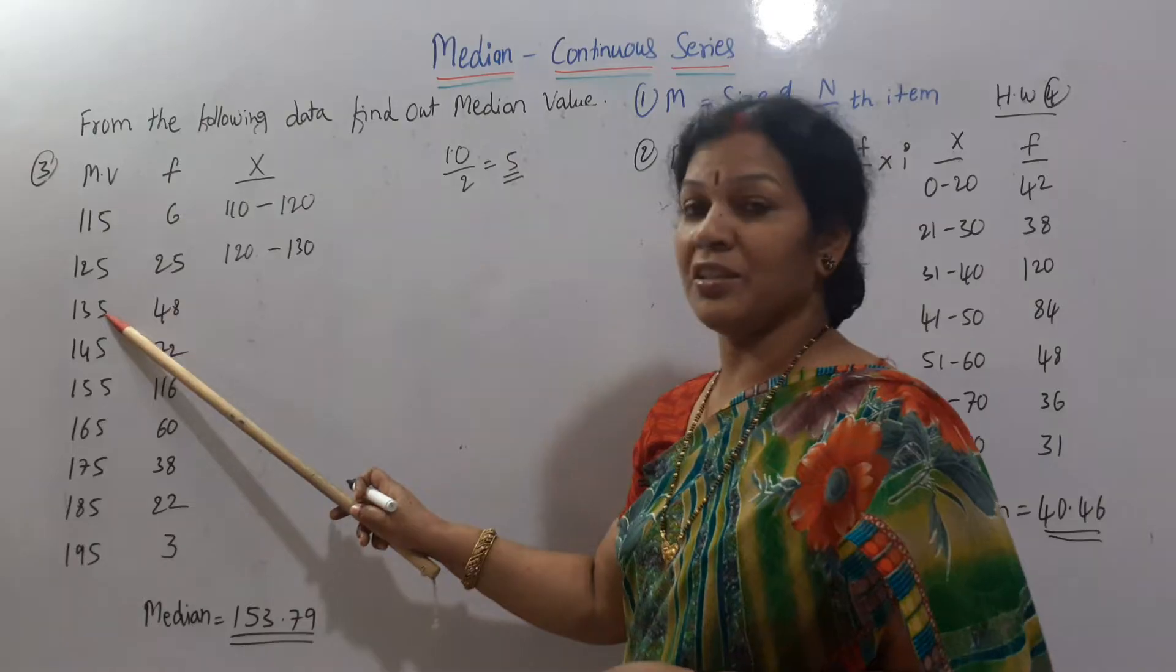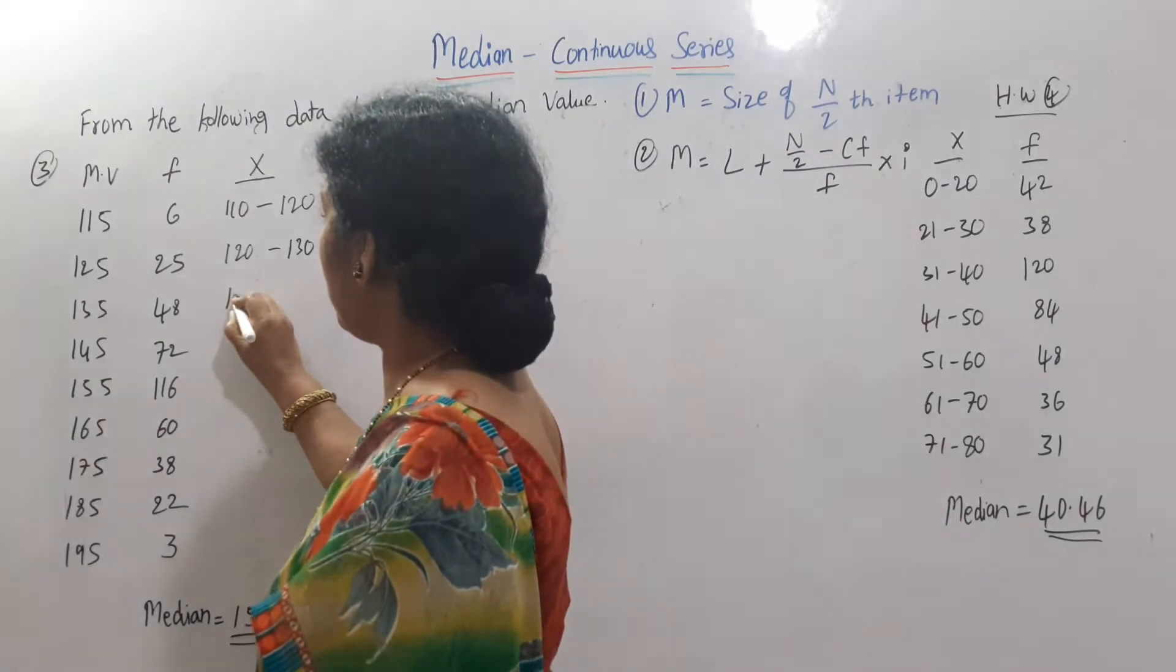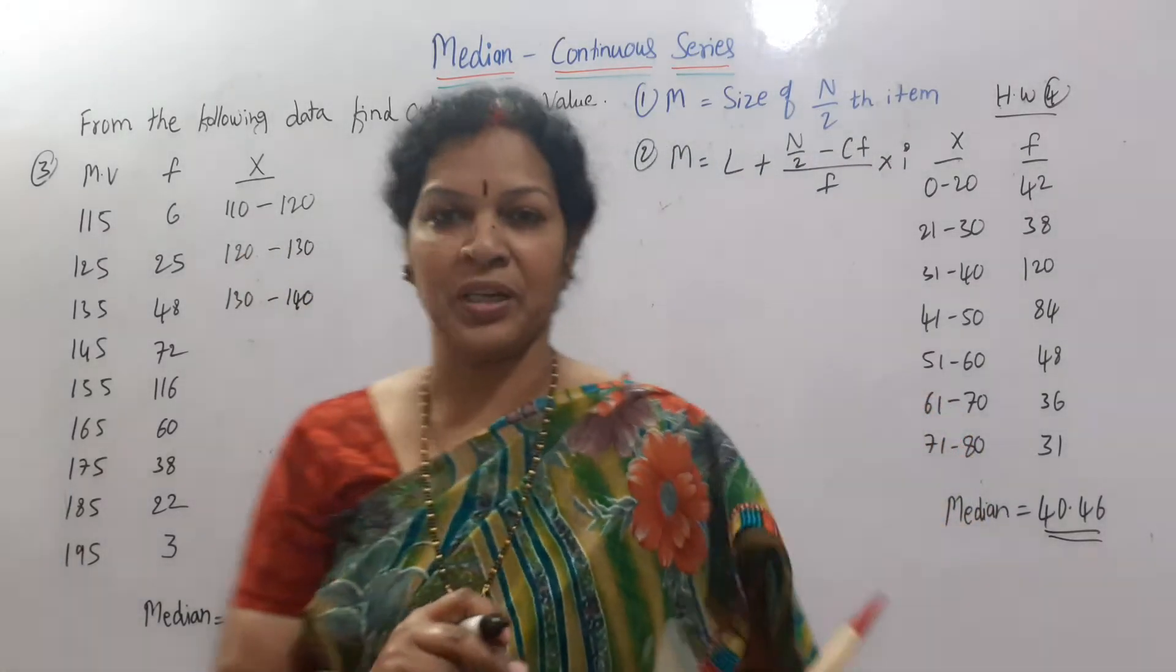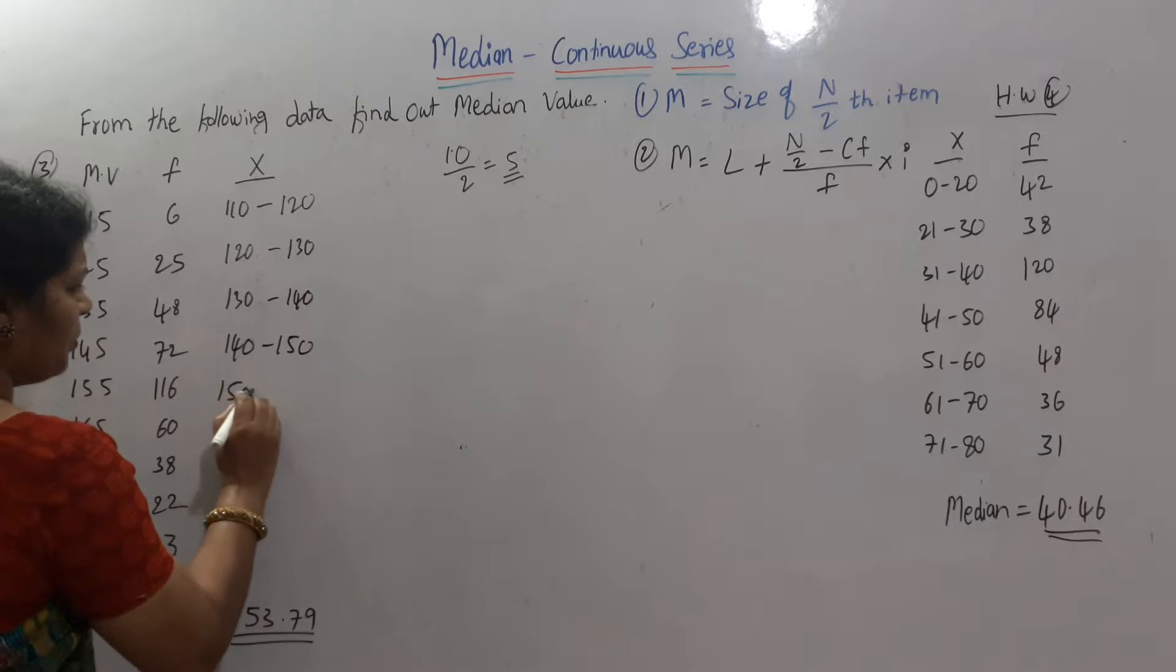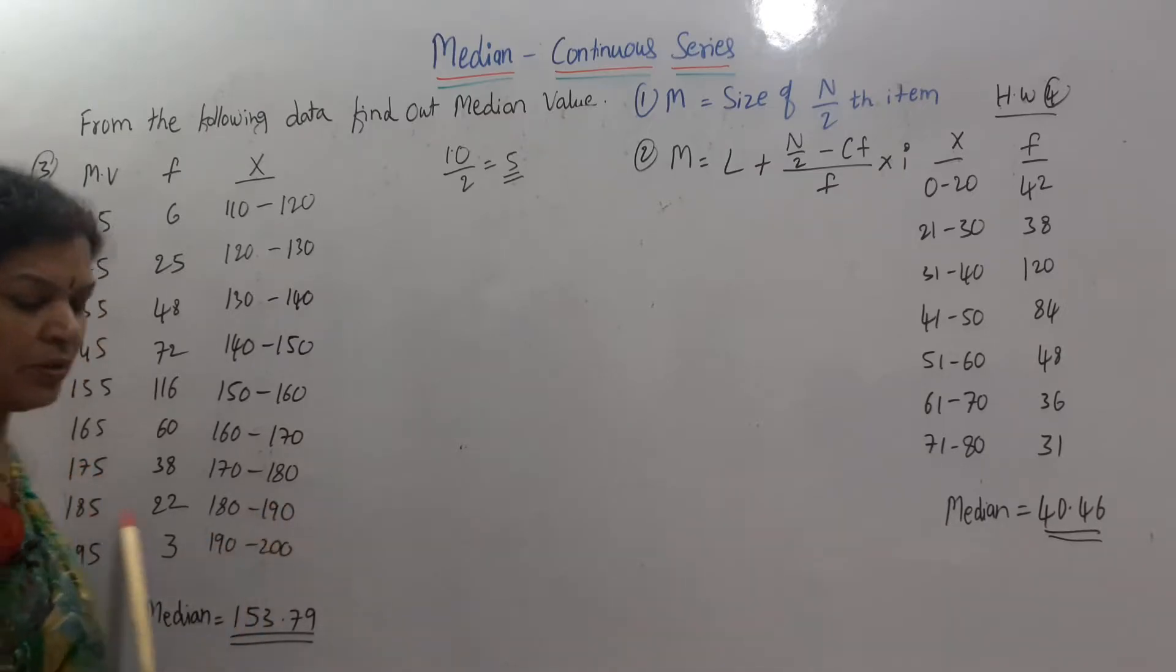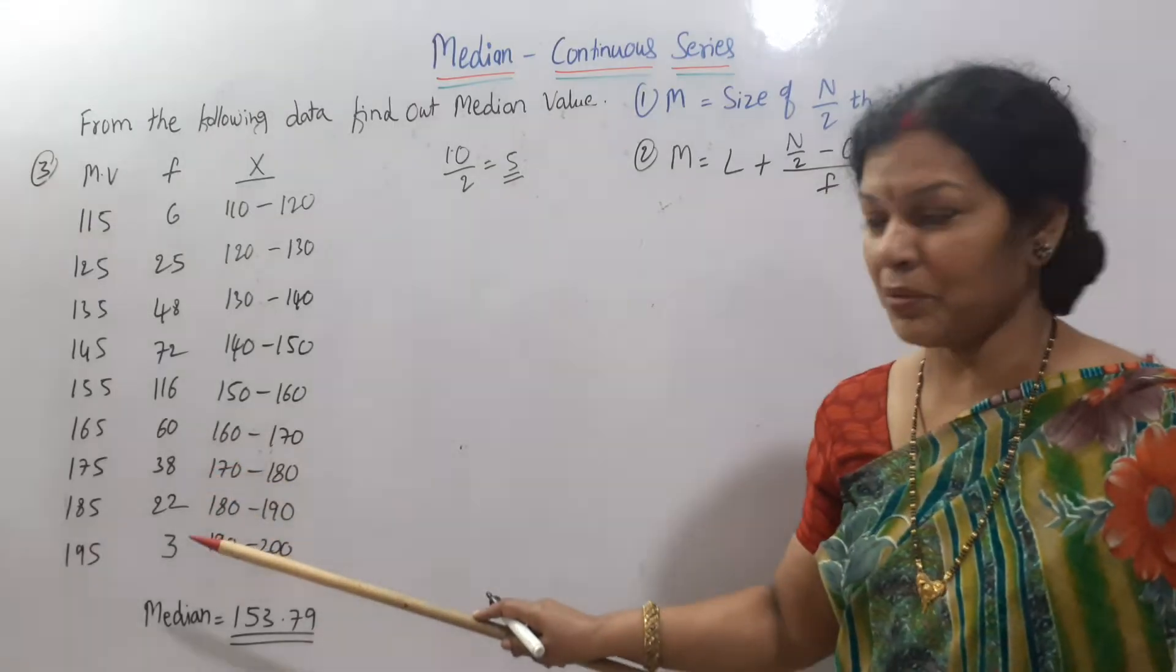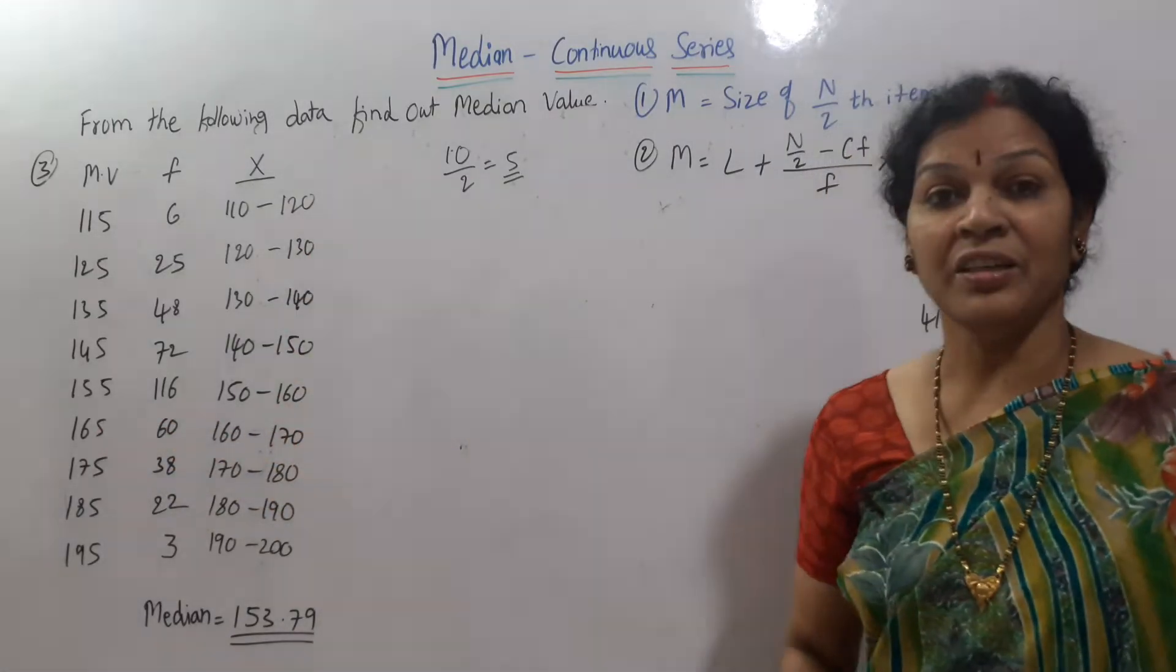120 plus 5 to 125, that is 130 upper class interval. In the same way, 130 lower class interval, 140 upper class interval. Add minus if you do lower class interval, 130. If you add 5, 140. Like total x value, we are going to write like this. You will get 140 to 150, 150 to 160. Same pattern. 160 to 170, 170 to 180, 180 to 190, and 190 to 200. Like you have arranged the x values.